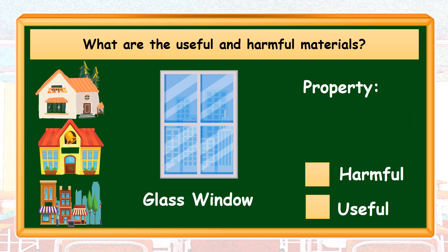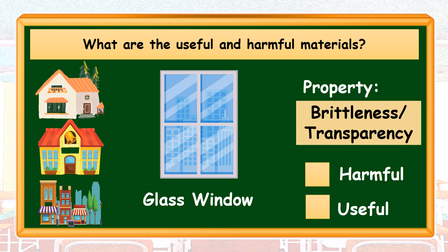We also have on the list a glass window. A glass window has the property of brittleness and transparency. Based on its property, a glass window can be useful and harmful as well. For its harmful effect, it can cause a wound when someone touches the broken pieces of it. While for its usefulness, it is used to absorb light from the outside.